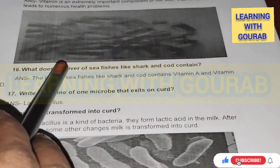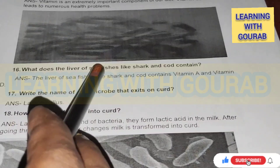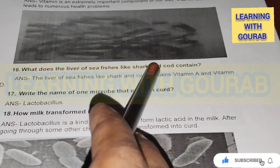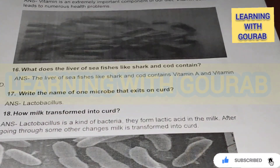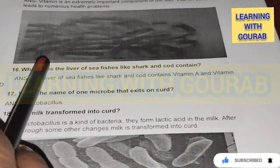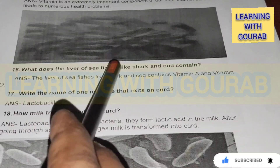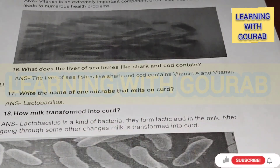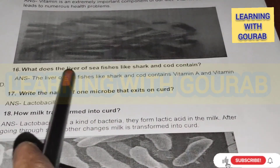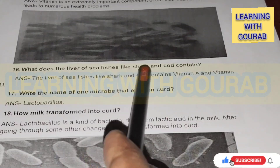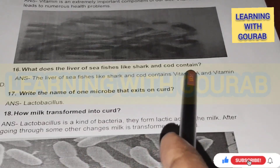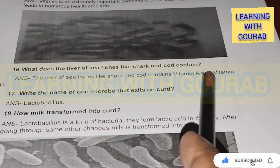What does the liver of sea fishes like shark and cod contain? Answer: The liver of sea fishes like shark and cod contains Vitamin A and Vitamin D.